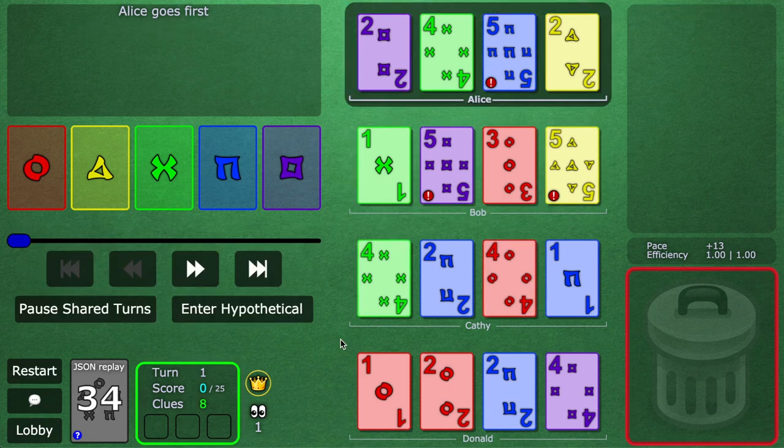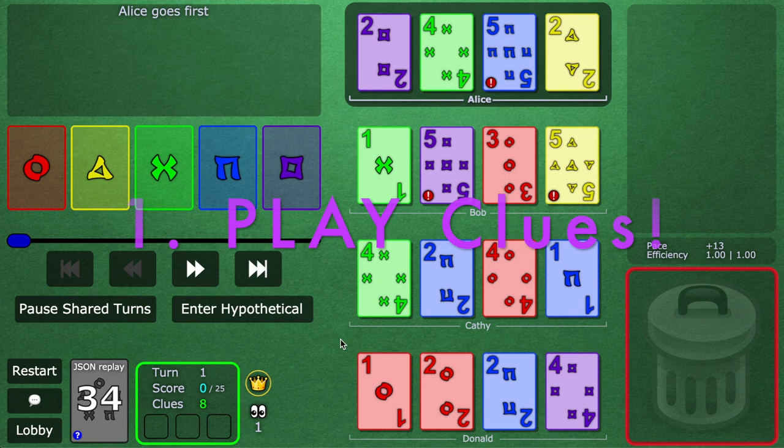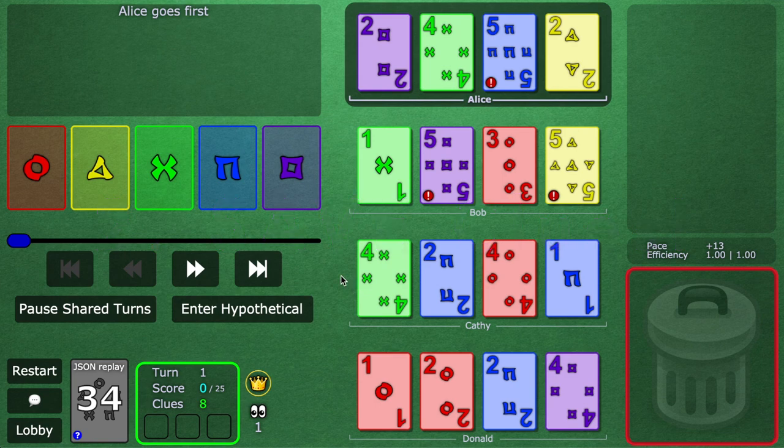Which brings me to the first real strategic principle, which is that each clue you give should really do one of two things. It should either get at least one new card played, or save at least one important card that needs to be saved. But actually literally all the clues you'll see in this game follow from that principle. Play cards, save cards, you'll be golden.